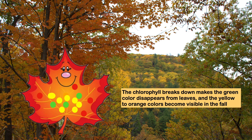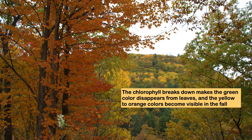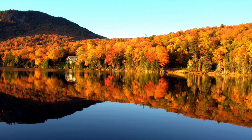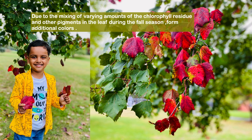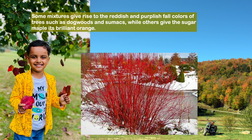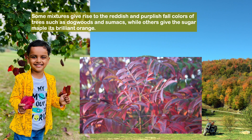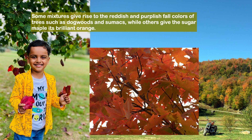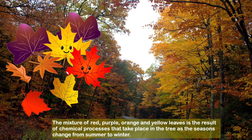The chlorophyll breaks down, making the green color disappear from leaves, and yellow to orange colors become visible in the fall. Due to the mixing of various amounts of the chlorophyll residue and other pigments in the leaf during the fall season, additional colors form. Some mixtures give rise to the reddish and purplish fall colors of trees such as dogwoods and sumacs, while others give the sugar maple its brilliant orange. The mixture of red, purple, orange, and yellow leaves is the result of chemical processes that take place in the trees as the season changes from summer to winter.